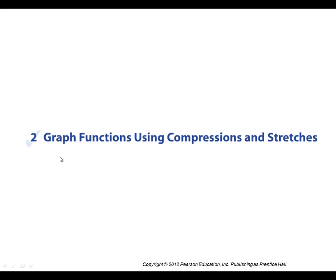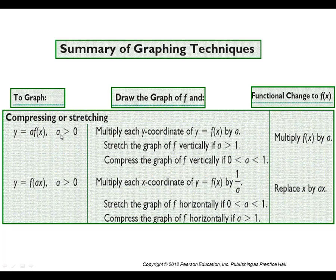Now let's look at graphing functions using compressions and stretching. When you have a number multiplying the function and that number is positive, you multiply it by each y-coordinate on the graph. When the number is greater than 1, you get vertical stretching — the graph looks more narrow. When you have a fraction between 0 and 1, you get vertical compression. Horizontal compression and stretching will be covered more when we get to trigonometric functions.